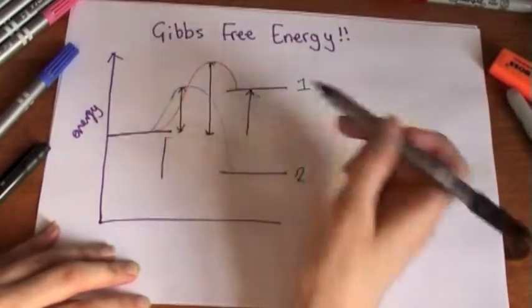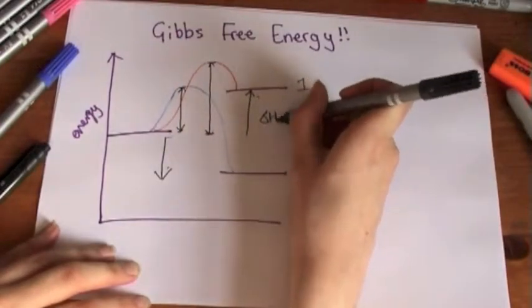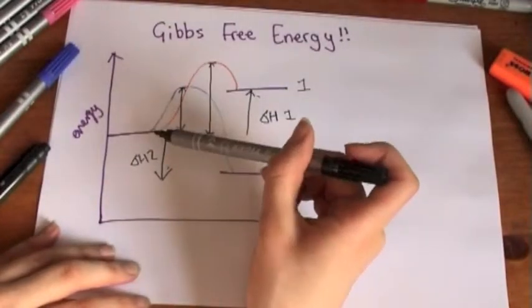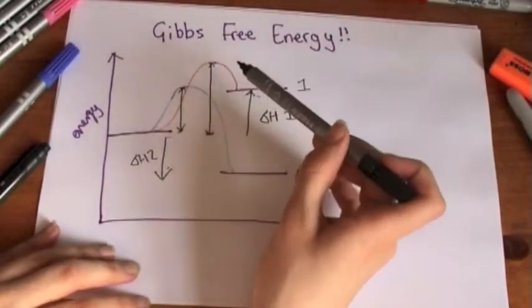If we were having an endothermic reaction where we take in heat and the energy of the system increases, then it'd be delta H. Then it's this reaction, so that's positive.